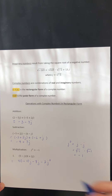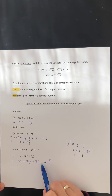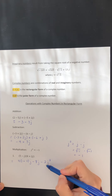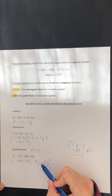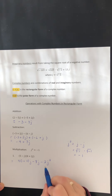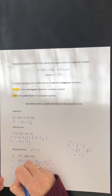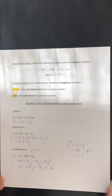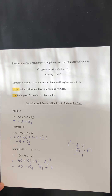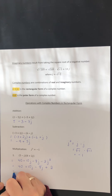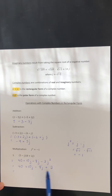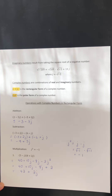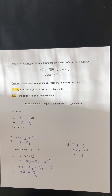Now here is where the j squared property is important. j squared is negative 1, so negative 2j squared becomes negative 2 multiplied by negative 1, which is positive 2. We now have two real parts and two imaginary parts, so we collect like terms. For the real part, we have 40 and positive 2. For the imaginary part, we have 10j and negative 8j. So our answer is 42 plus 2j.